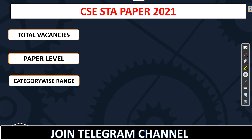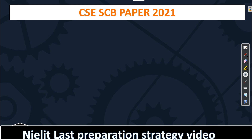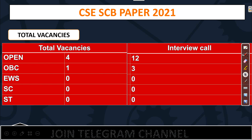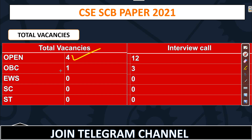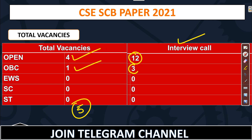The next paper is the CSE Scientist B paper, which was the most important paper of this year. For vacancies: open 4, OBC 1, so total 5 vacancies for CSE Scientist B. Regarding interview calls, a total of 12 people will get an interview call from open category, and 3 from OBC, making it 15 people total. Out of those, 5 will get the final selection.